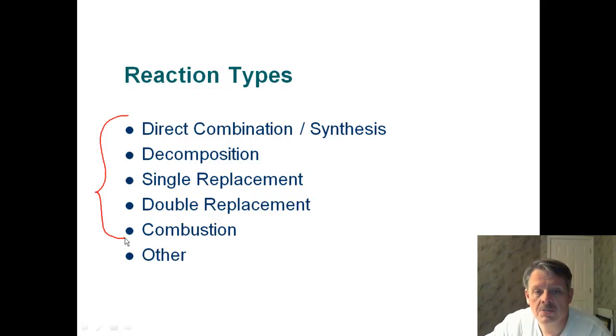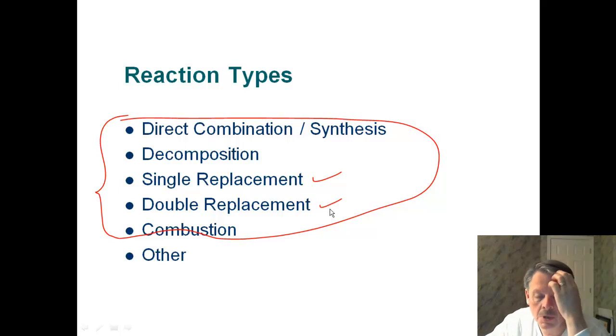The reaction types you have to know are these five. You have to be able to look at them and understand what they are and be able to predict the products. The two of them we spend a lot of time predicting products, which are single replacement and double replacement. We haven't spent much time with the other three, so I'm going to spend a little bit more time with those today.